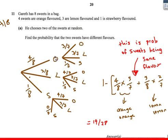And then if I choose an orange, then there's only three oranges left and there's only seven sweets left. But there's still three lemons, there's still one strawberry. If I choose a lemon first, then there's only going to be two lemons, but there's still going to be four orange and there's one strawberry, and so on. So I fill in my tree diagram like this.